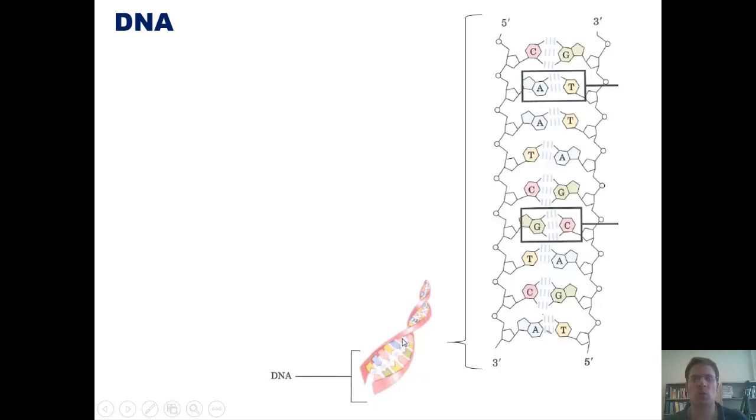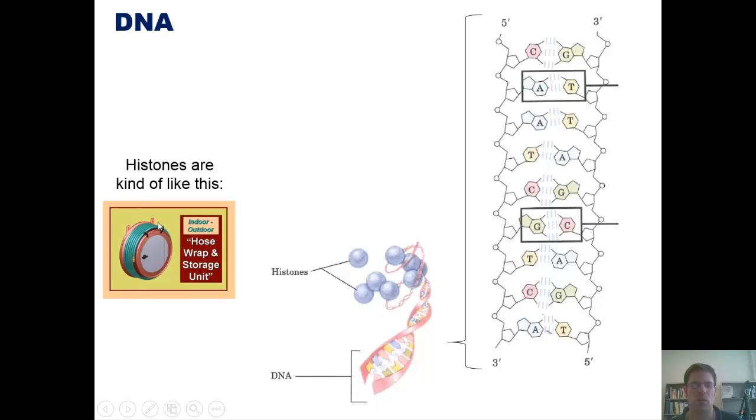Now, it turns out that in order to package these ribbons of DNA into the nucleus of a cell, we have to wrap them around something called a histone. Histones here look like little spheres. Histones, if you think about it, are a little bit like this kind of structure that we use to wrap our garden hose around in front of our house. So if any of you guys have a garden hose and you've seen it get wrapped around something that looks kind of like this, a hose-wrapped storage unit is kind of, for a garden hose, what a histone is for DNA. So DNA gets wrapped around a histone.